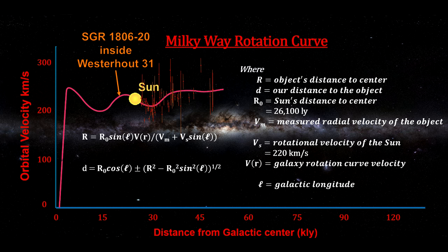For Magnetar SGR 1806-20, a number of astronomers have connected it to the giant molecular cloud Westerhout 31. Its longitude is 10 degrees. Using the rotation curve, it is estimated to be 45,000 light-years away, give or take 5,000 light-years.